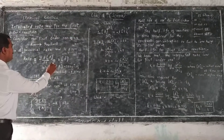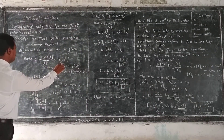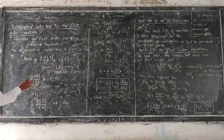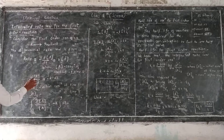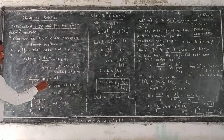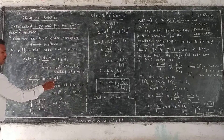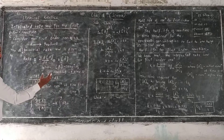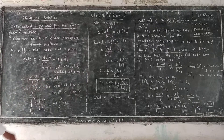Rearranging this equation, we get d[A] divided by [A] equals minus K times dt, where the same variables are taken on the same side.